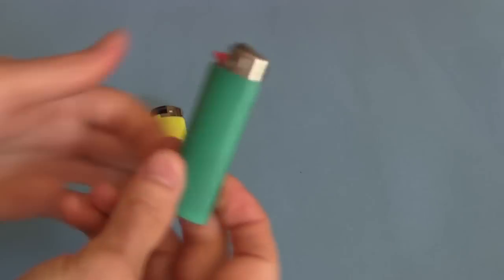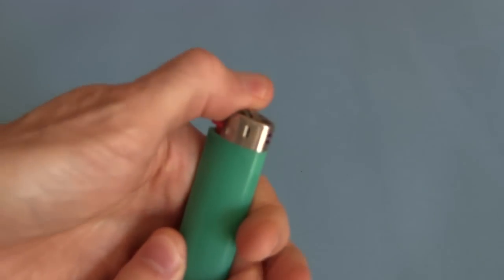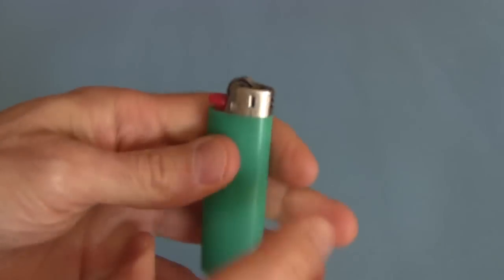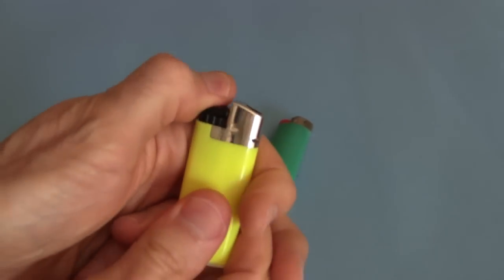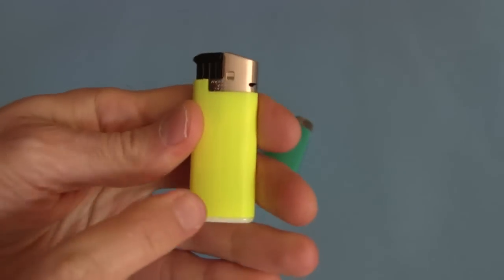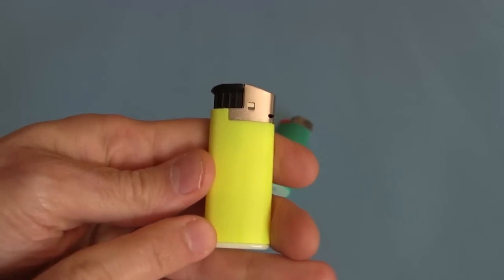There are commonly two types of lighters you'll find in the store. One has a striker wheel which you turn and that strikes a piece of flint which creates a spark. And then there's the one where you simply push down on a button. This is the one we're talking about in this video. This is the one with the piezoelectric crystal in it.